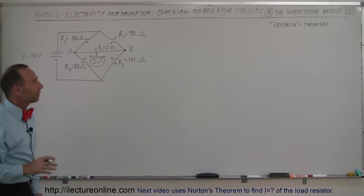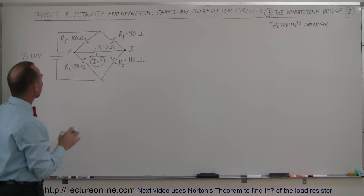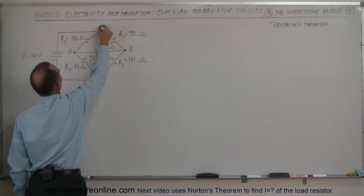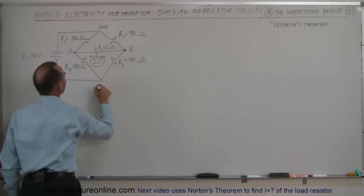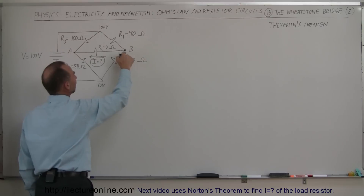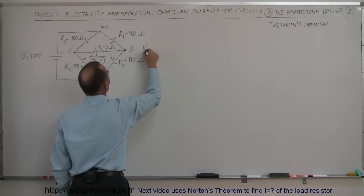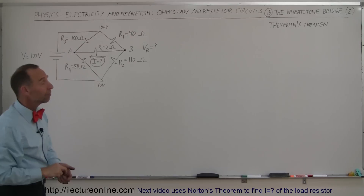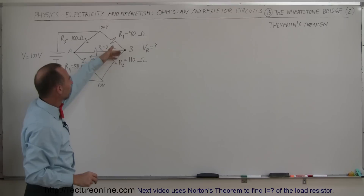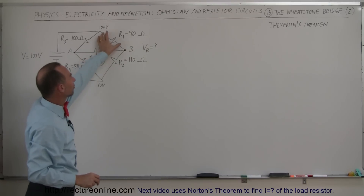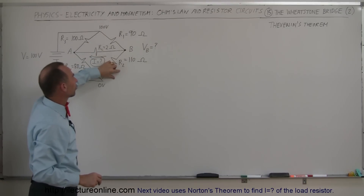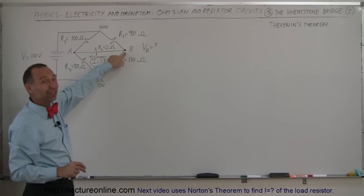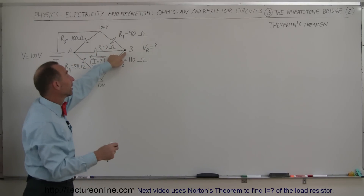Let's talk a little bit more about the Wheatstone Bridge. Since there's a 100-volt battery attached to this, we know that the top is at 100 volts and the bottom will be at zero volts. We want to find out what V_B is and what V_A is. It depends upon how much of the voltage drops across one resistor versus the other. If this resistor is smaller than this resistor, less voltage will drop across it, and the voltage at B will be greater than 50 volts.